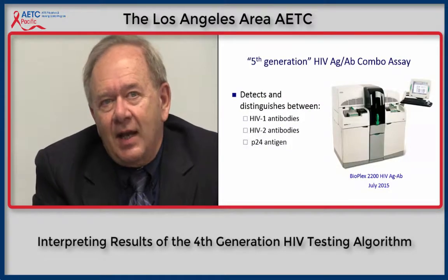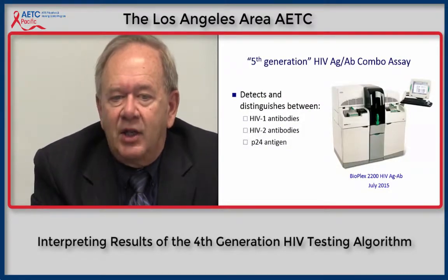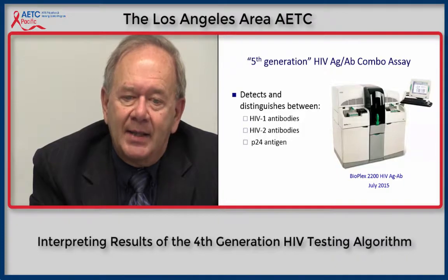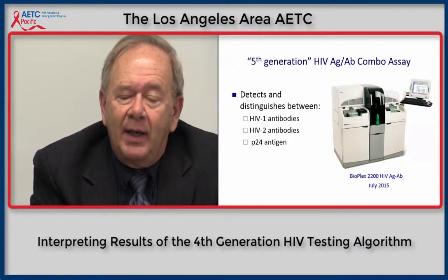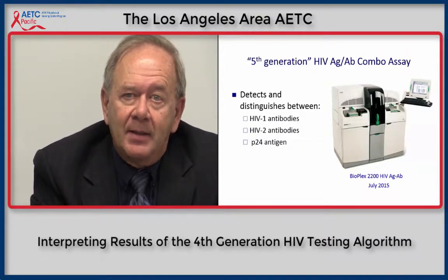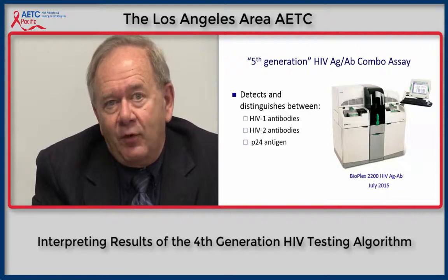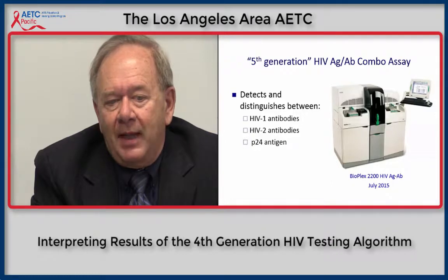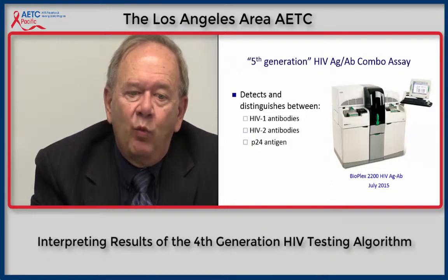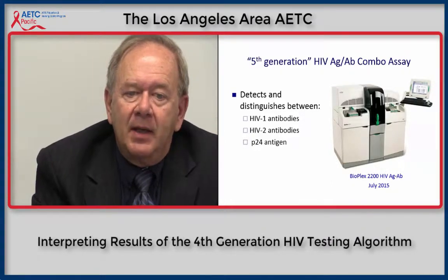There is also now the so-called fifth-generation HIV antigen-antibody combination assay — the BioPlex test. It detects and distinguishes between HIV-1 antibodies, HIV-2 antibodies, and P-24 antigen. The other tests only tell you positive or negative; they don't tell you which component caused the test to be positive. The BioPlex does specifically indicate which antibody or antigen caused the test to be reactive.